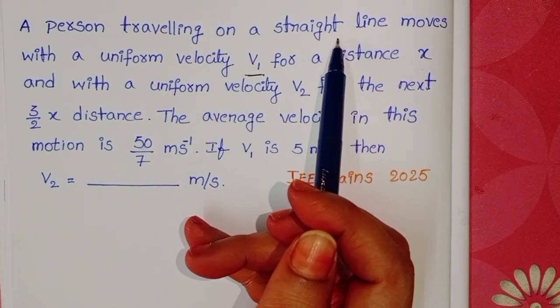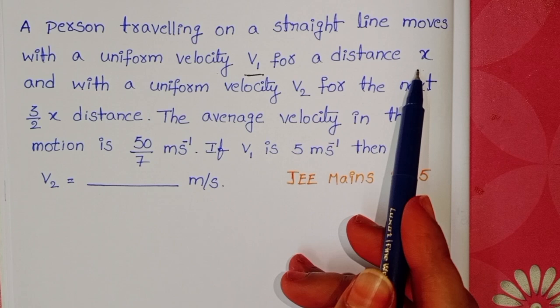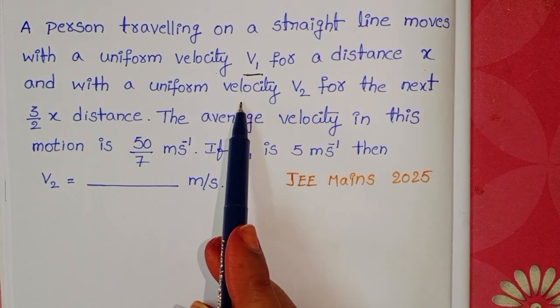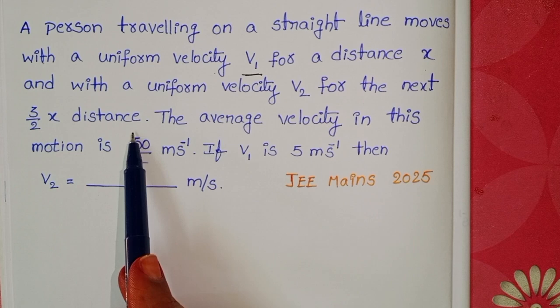A person travelling on a straight line moves with a uniform velocity v1 for x distance and with uniform velocity v2 for the next 3 by 2 x distance.